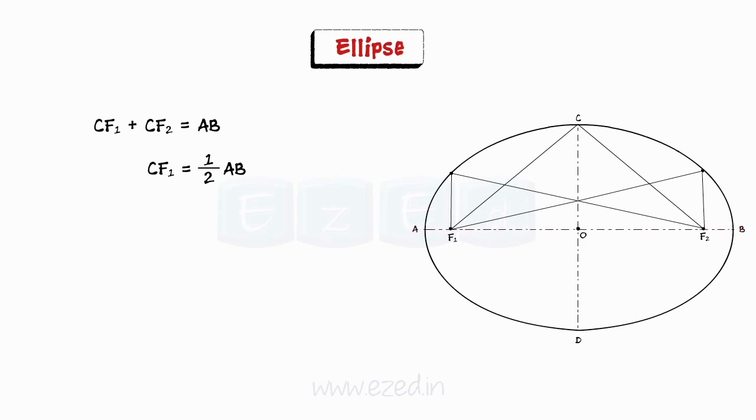Here, length AB and CD are major and minor axis of ellipse. Mathematically, an ellipse can be described by the equation x square by a square plus y square by b square equals 1.